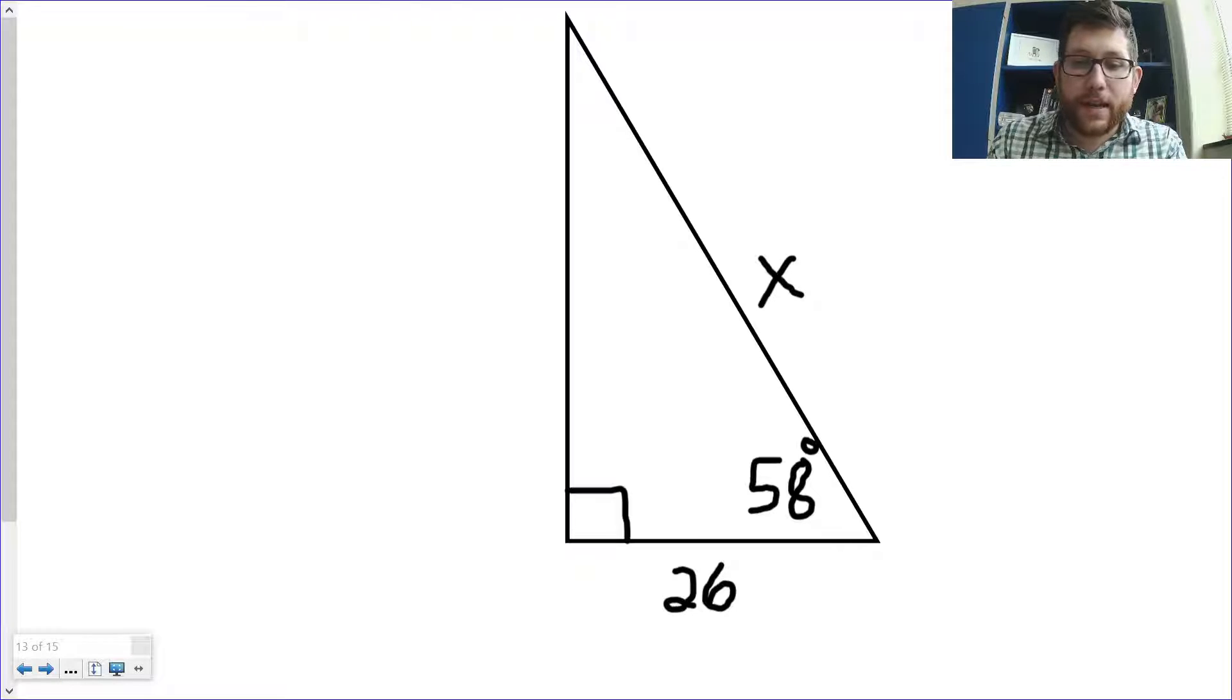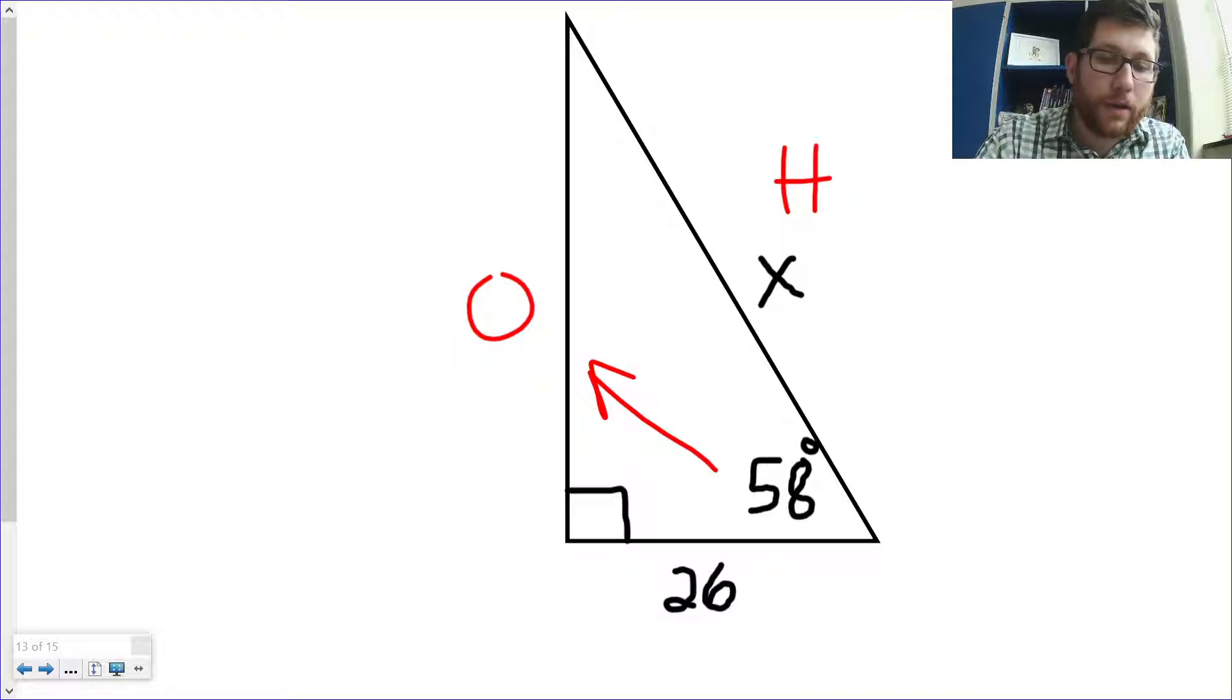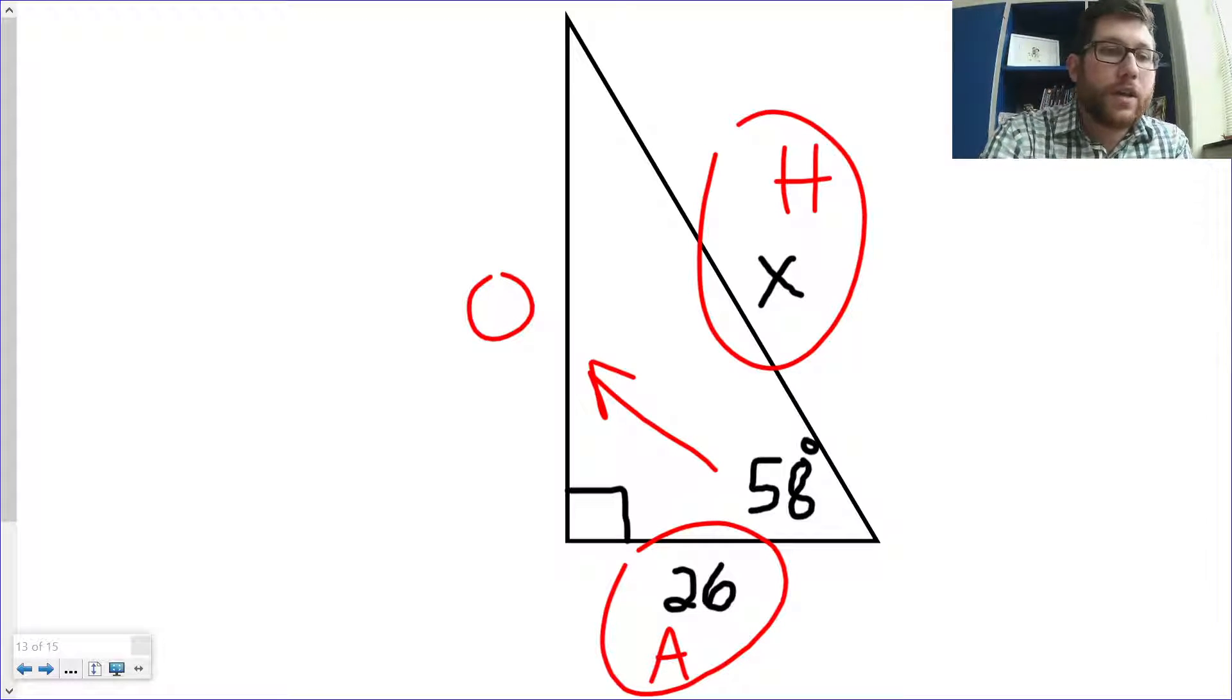All right. Let's look at this next one. Once again, we're going to start by labeling our sides. H. This is my O side. It's opposite my angle here. And that's my A. Now, notice what I have this time. I've got something with my A. I've got something with my H. That's A and H. That's cosine.